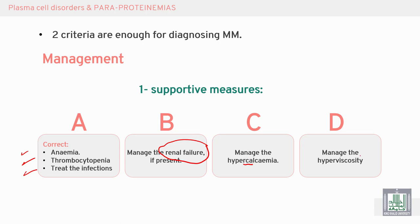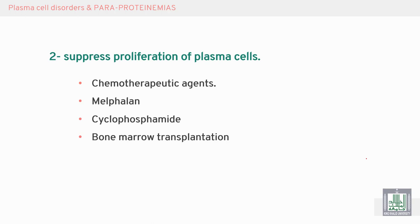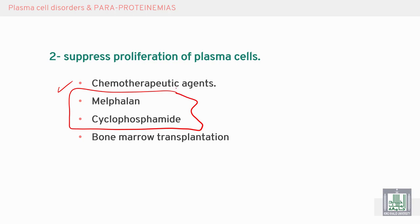D: management of hyperviscosity. To suppress the proliferation of the plasma cells, we use chemotherapy. Melphalan and cyclophosphamide are examples of chemotherapeutic agents used for treatment of malignant plasma cells, along with stem cell transplantation.